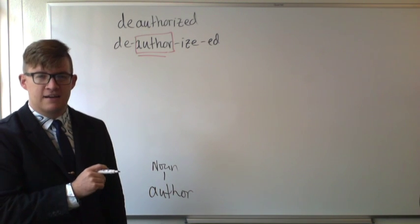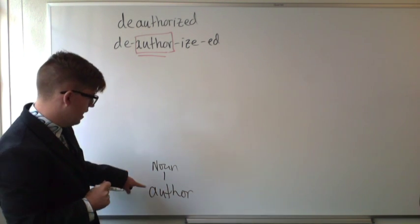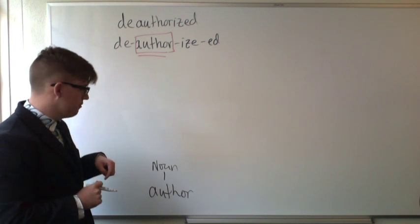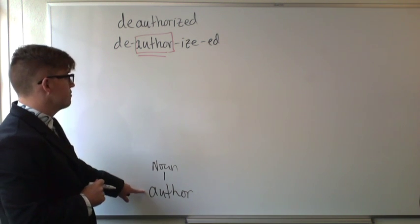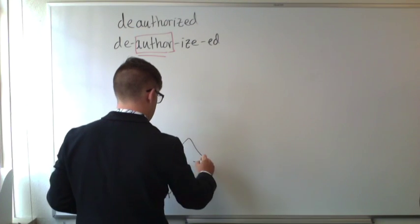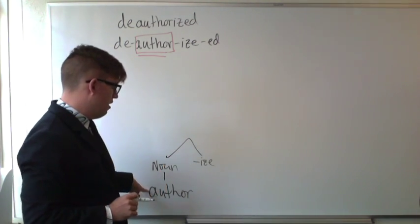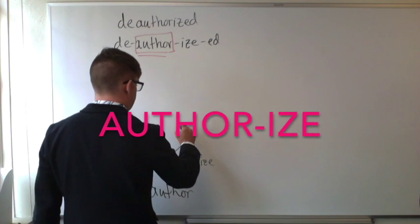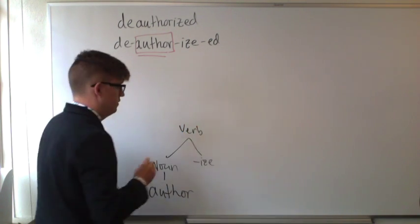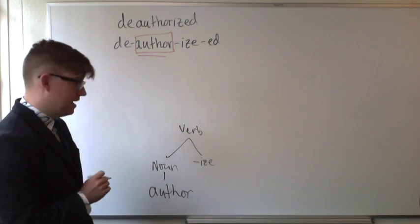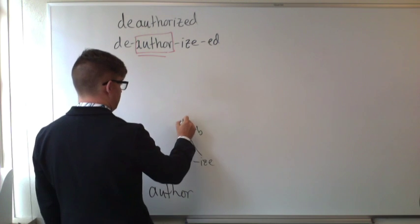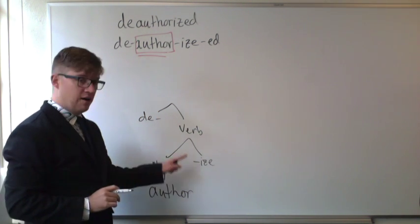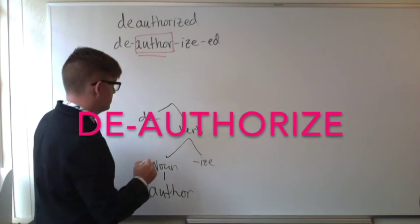Beginning, 'author' is a noun. We identify each new word with its lexical category. The first thing 'author' combines with is '-ize', and when you combine 'author' with '-ize' you get 'authorize', which is a verb. Next we combine 'authorize' with the 'de-' prefix, and when you combine 'de-' with 'authorize' you get 'deauthorize', which is still a verb.